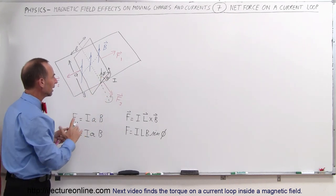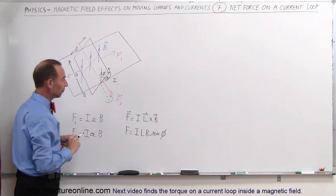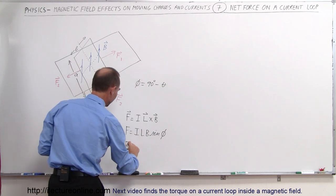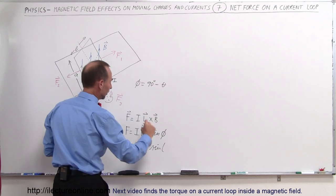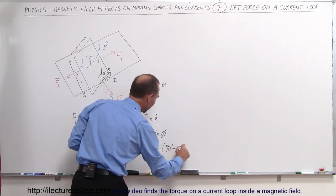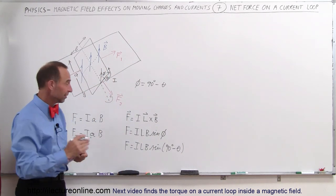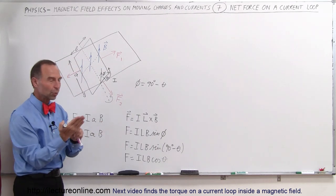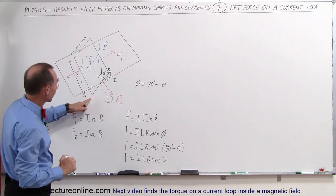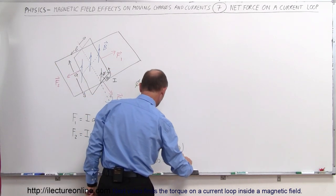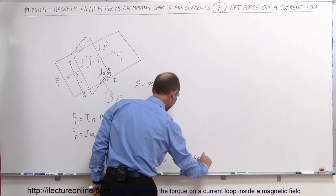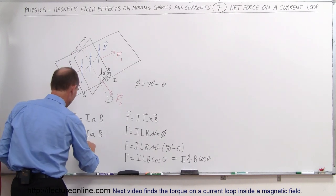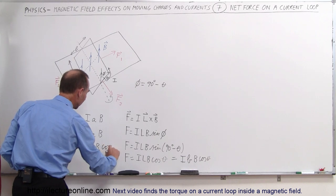The sine of phi — how do we relate phi to theta? We know that phi is equal to 90 degrees minus theta, so F is therefore equal to I times L times B times the sine of (90 degrees minus theta). The sine of (90 minus theta) is the same as the cosine of theta, so finally the force equals ILB times the cosine of theta. The length here would be the side equal to B, so we can say F3 equals I times B times big-B times the cosine of theta.